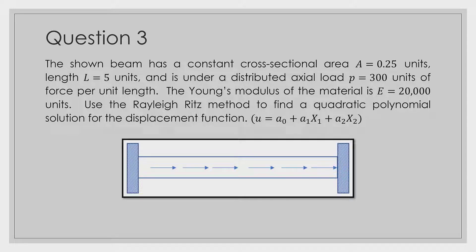Welcome to question number three. It's going to be a little bit longer than an average question, but it's very nice because it talks about the Rayleigh-Ritz method as a whole. The shown beam has a constant cross-sectional area of 0.25 units, a length L of 5 units, under a distributed axial load P of 300 units of force per unit length, and Young's modulus of 20,000 units. We need to use the Rayleigh-Ritz method to find a quadratic polynomial solution for the displacement function: a₀ + a₁·x1 + a₂·x1².